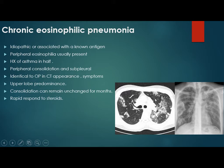Peripheral and subpleural consolidation is identical to cryptogenic organizing pneumonia in appearance and symptoms. There is upper lung predominance and the consolidation can remain unchanged for months. This rapidly responds to steroids but not to antibiotics. On chest X-ray, it gives the appearance of a reverse batwing sign.